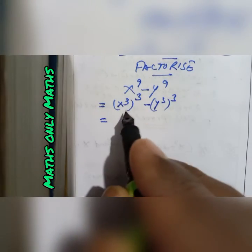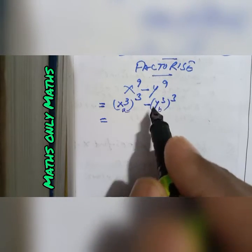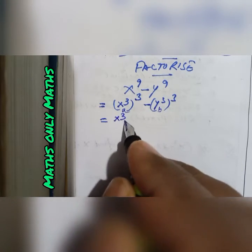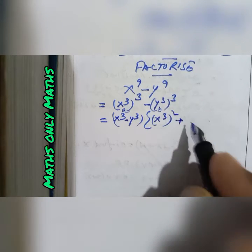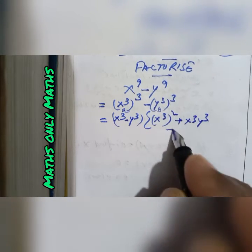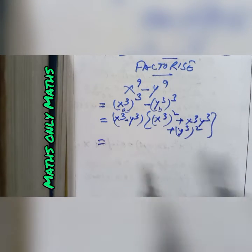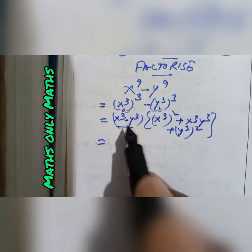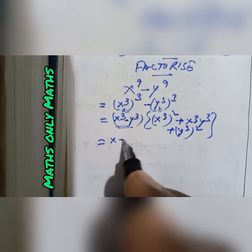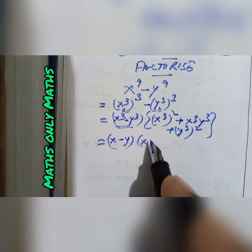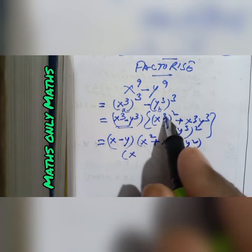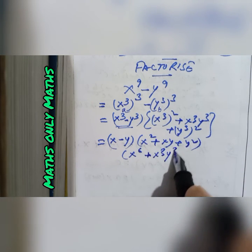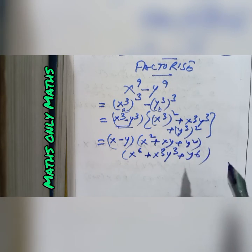Let a = x³ and b = y³. So I can write (x³ − y³)(x⁶ + x³y³ + y⁶). Now x³ minus y³ expands further as (x − y)(x² + xy + y²), giving the remaining part x⁶ + x³y³ + y⁶ alongside it for the complete factorization.